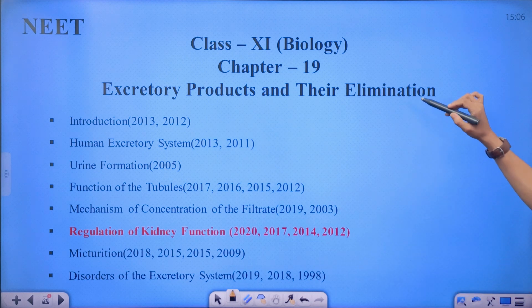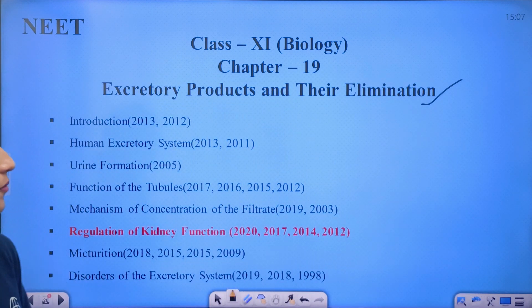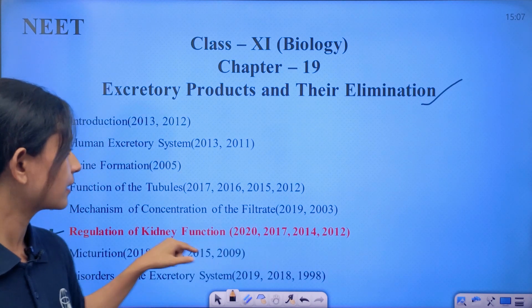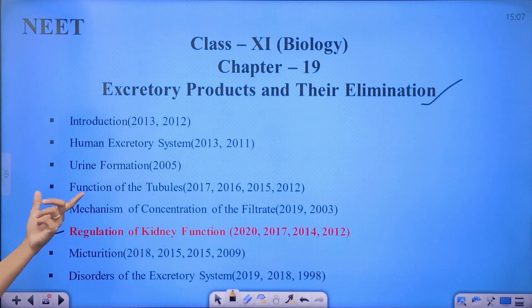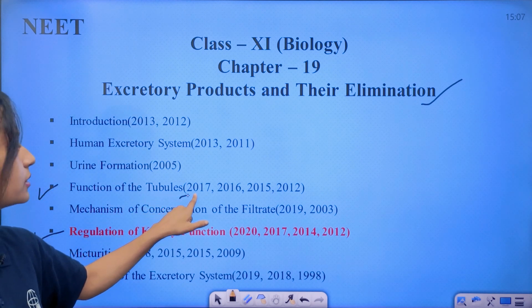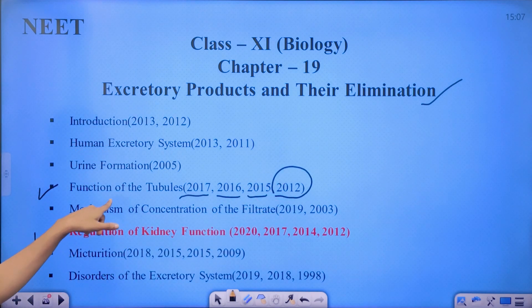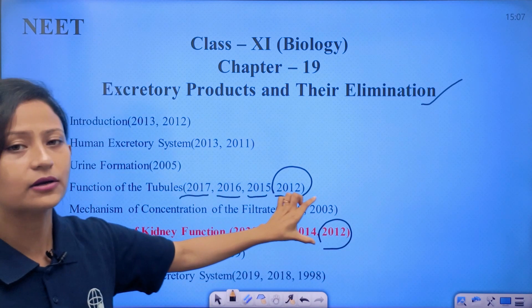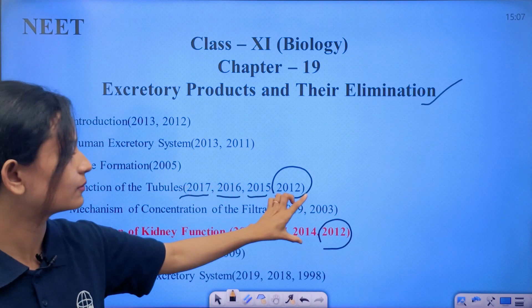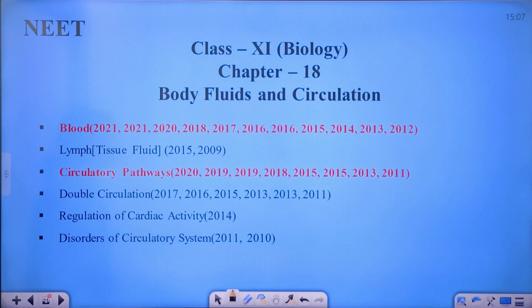Next chapter: Excretory Products and Their Elimination. The most important topic is the regulation of kidney function. This topic has appeared very frequently — questions came from function of tubules in 2017, 2016, 2015, and 2012. The frequency of questions from this topic is very high, making it very important.